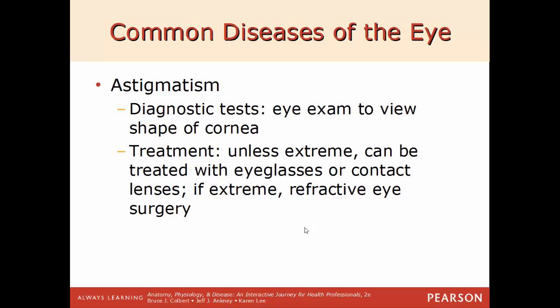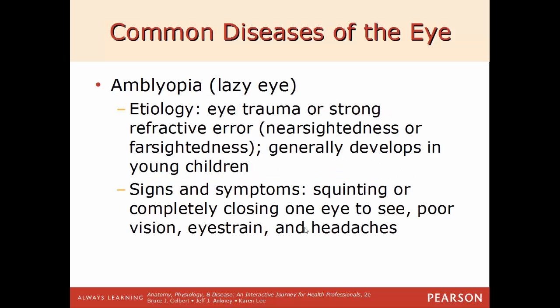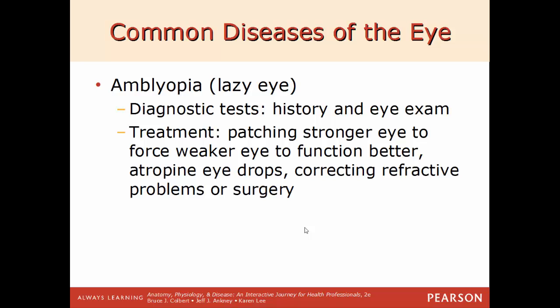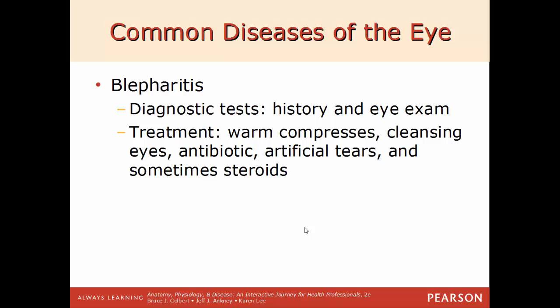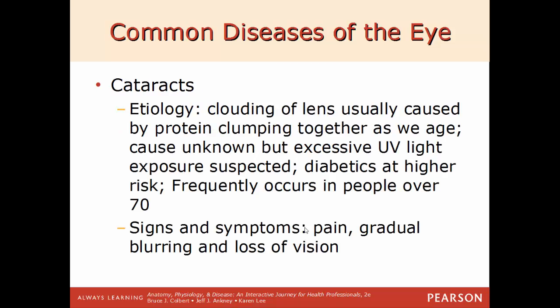Lazy eye (amblyopia): caused by eye trauma or a strong refractive error — such as being very strongly nearsighted or farsighted — generally developing in young children. Signs include squinting or completely closing one eye to see, poor vision, eye strain, and headaches. Diagnosed by patient history and an eye exam. Treatments include patching the stronger eye to force the weaker eye to compensate, atropine eye drops, and corrective refractive surgery if needed. Blepharitis is inflammation of the eyelids, usually caused by bacterial infection, with signs of eye irritation, tearing, dryness, burning, and foreign body sensation. Treated with warm compresses, antibiotics, artificial tears, and steroids if needed.